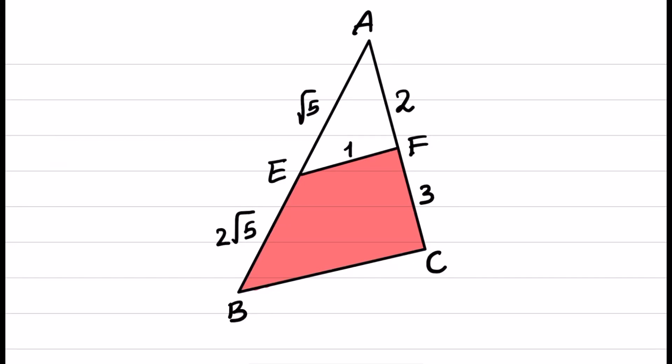Welcome to a new episode of Mathedartic. In this question, triangle ABC is given and we know the lengths of AE, AF, EF, FC, and EB. The question asks to find the area of EFCB, the colored region that you see.